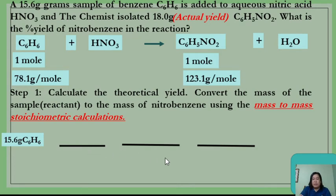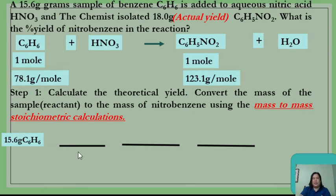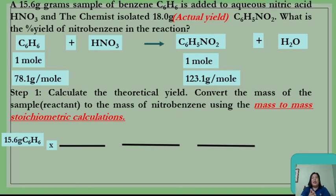In mass-to-mass stoichiometric calculation, your starting amount is measured in grams and your end unit also ends in grams. There will always be three conversion factors in dimensional analysis for mass-to-mass problems. To cancel grams in 15.6 grams of benzene, you use the molar mass of benzene: 78.1 grams benzene is placed in the denominator with 1 mole benzene in the numerator. Remember, any time you see grams, you need to cancel them using the molar mass of that substance.